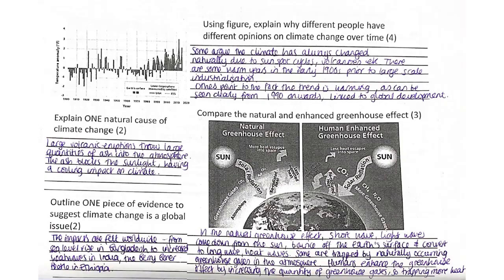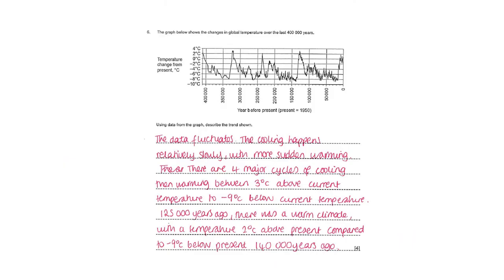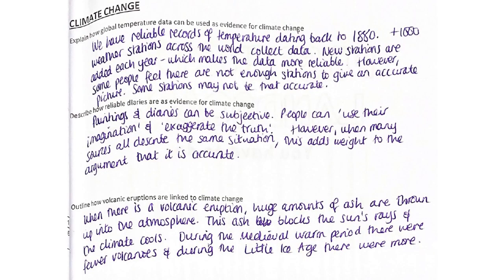You can have a look at some specific questions on the next couple of slides — you can pause the video and look at them. These are the 'what's not come up yet' questions. In particular, there's a question on how global temperature data can be used as evidence. We have records of temperature dating back to 1880, with weather stations across the world collecting data, but some are out of date, so there are issues looking at trends over time.